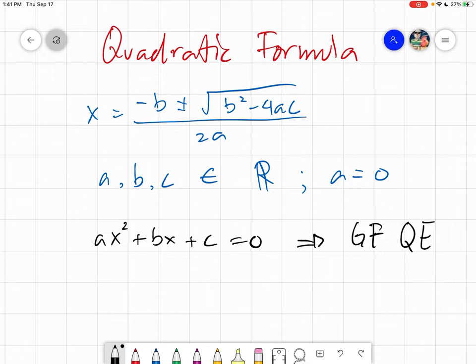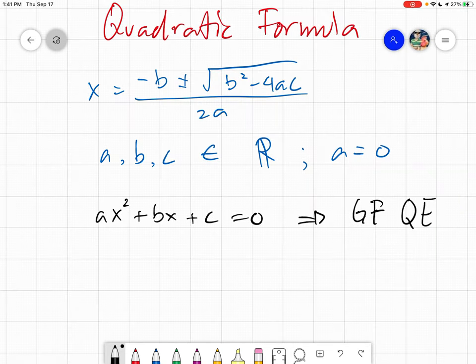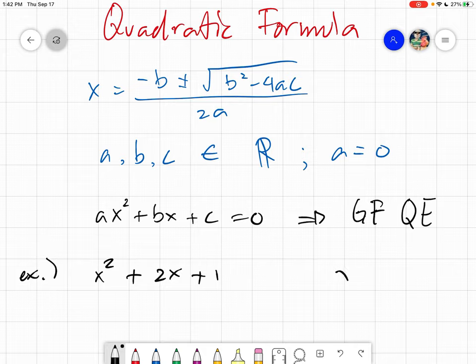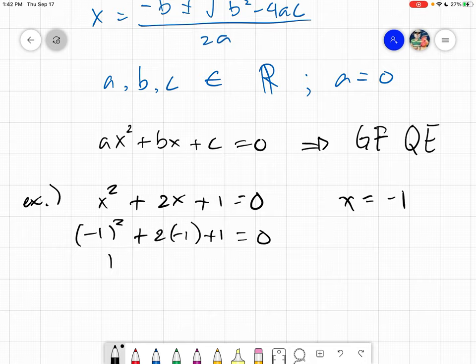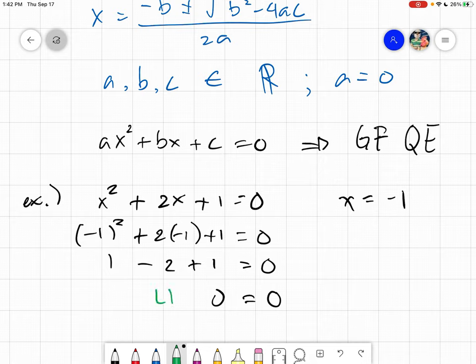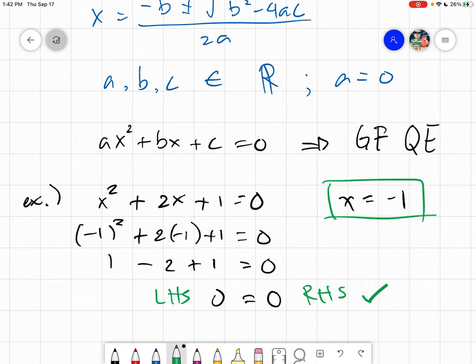Now knowing the values of a, b, and c and our quadratic formula, let's try to solve the values of x. For our first example, we have x squared plus 2x plus 1 equals zero. The answer for x here should be negative 1. This is negative 1 squared plus 2 times negative 1 plus 1 equals zero. Therefore, zero equals zero, and the answer is correct. But we want to get this using the quadratic formula.